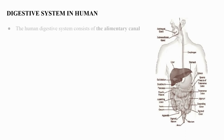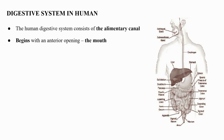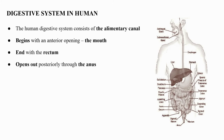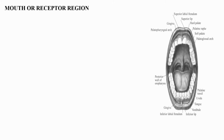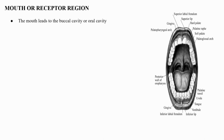The human digestive system consists of the alimentary canal, which begins with an anterior opening — the mouth — and ends with the rectum, which opens out posteriorly through the anus. The mouth leads to the buccal cavity or oral cavity.